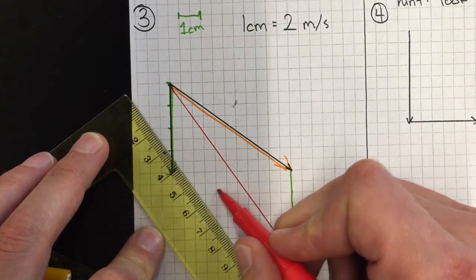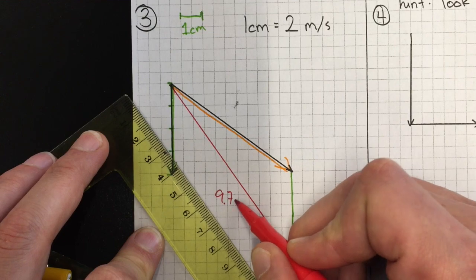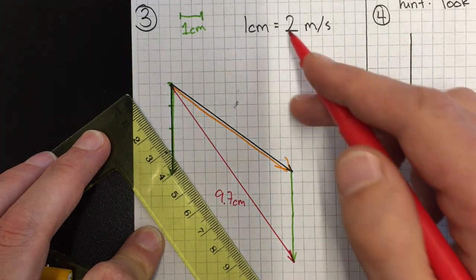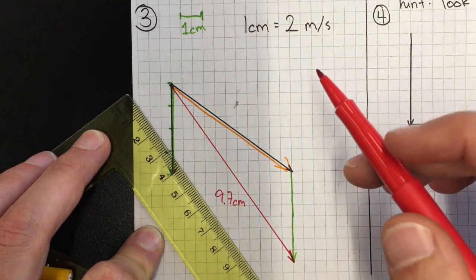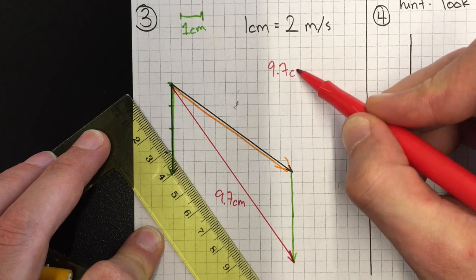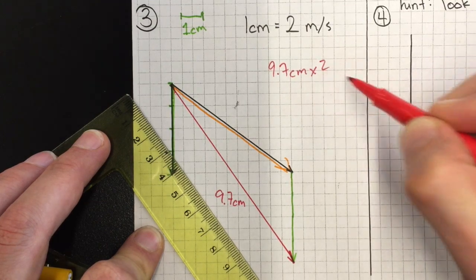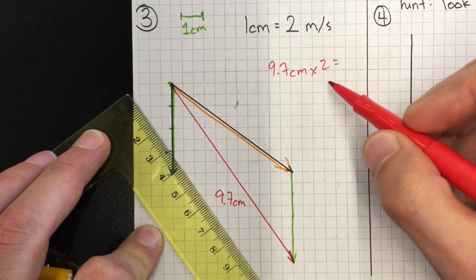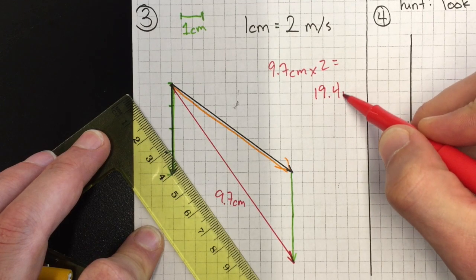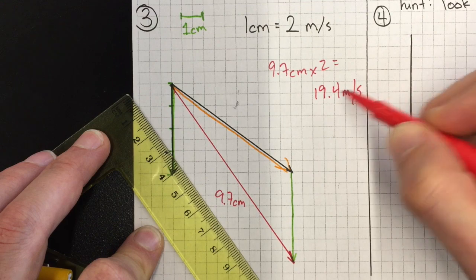So this is nine point seven centimeters long, and using the scale of this drawing, the magnitude is now nine point seven centimeters times two, so we get nineteen point four meters per second. So that's our magnitude.